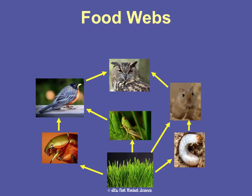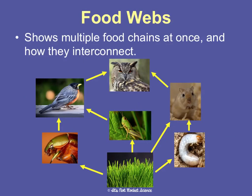A food web is a bit more complicated — it shows multiple food chains at once and how they interconnect. In this food web, one chain goes grass → beetle → bird → owl. Another goes grass → grasshopper → bird → owl. Or grass → grub → mouse → owl. Or grass → mouse → owl. All these different food chains exist in one food web, showing how they interconnect. Notice that energy still flows in one direction, and producers are still the base with higher-level consumers at the top.